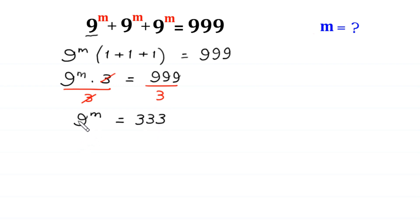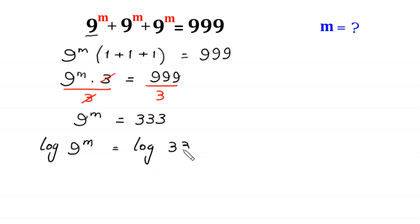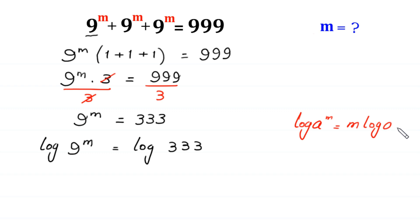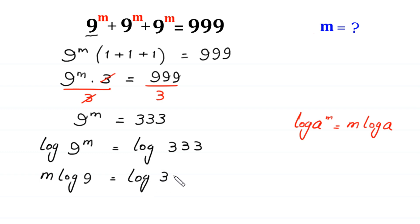Now from here we take log of both sides. By using the log property: log of a to the power m is equal to m times log of a. This log of 9 to the power m will become m times log of 9, is equal to log of 333.